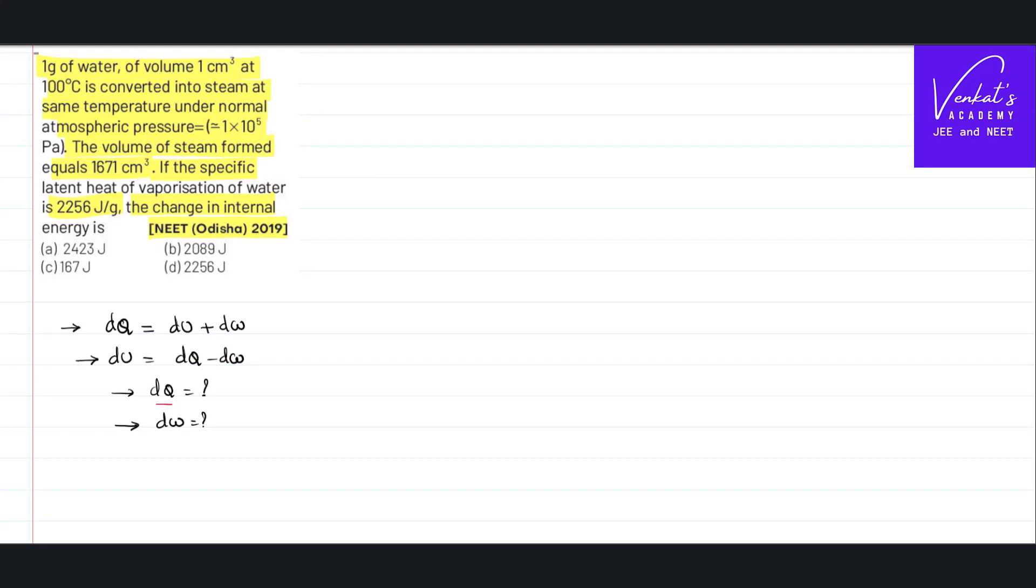So to calculate dQ, we shall remember the very definition of latent heat. Latent heat is defined as the amount of heat energy required to convert unit mass of substance from one state to other at constant temperature. It is given that constant temperature is 100 degrees centigrade. So from this I can write dQ equal to ml. Mass is given for you in the problem as 1 gram of water.